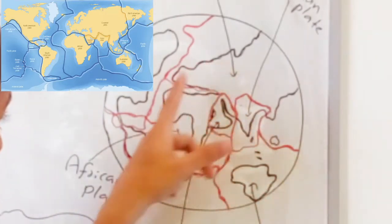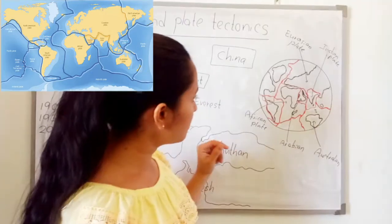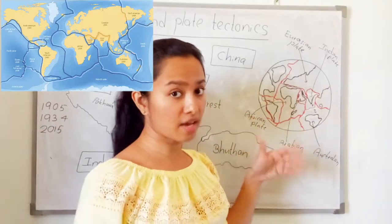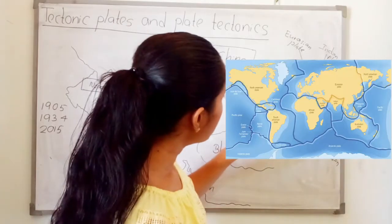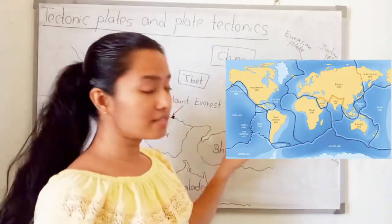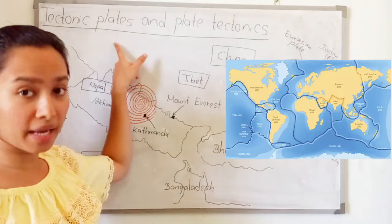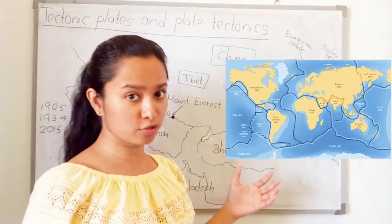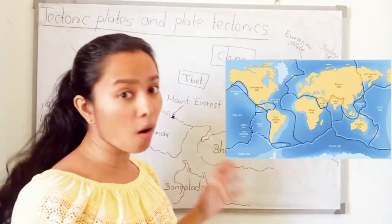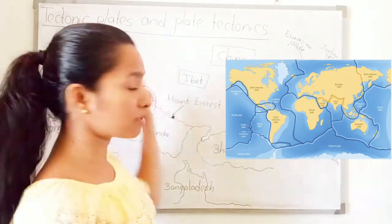You can count nearly six sections here — one, two, three, four, five, six. There are more, but here you can see nearly six sections. We call these sections as tectonic plates. So the earth crust is divided into sections, and we call these sections tectonic plates.